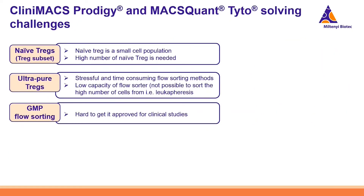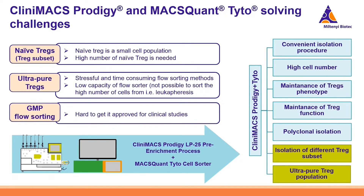In recent years, additional pain points and requirements have emerged. Researchers are more interested in T-reg subsets such as naive T-regs, which are a very small cell population, yet high numbers are needed for effective treatment. The need for ultra-pure T-regs is also rising, and GMP-grade floor sorting is challenging with difficult regulatory approval. Combining the CliniMACS Prodigy and the MaxQuantito cell sorter is the perfect fit to address these pain points.